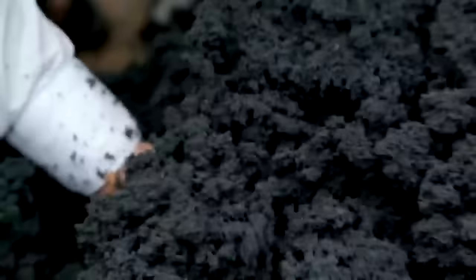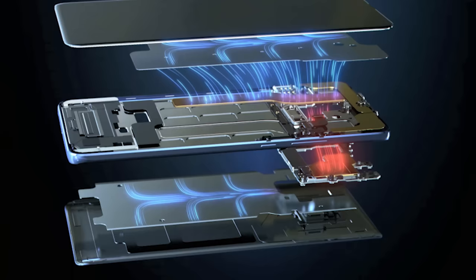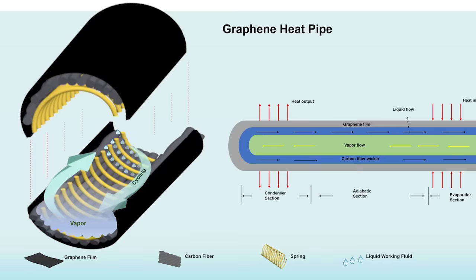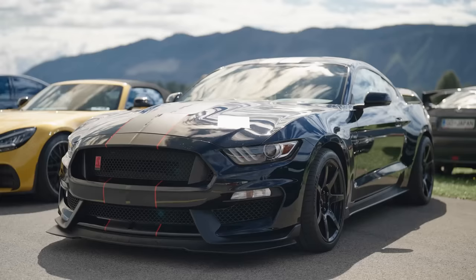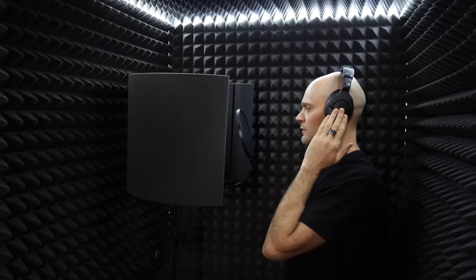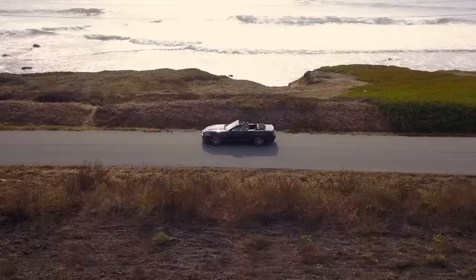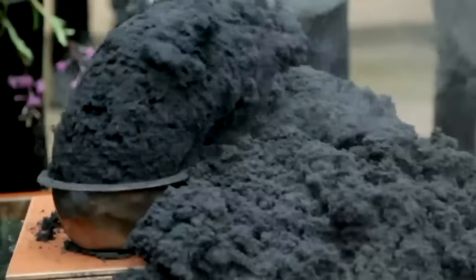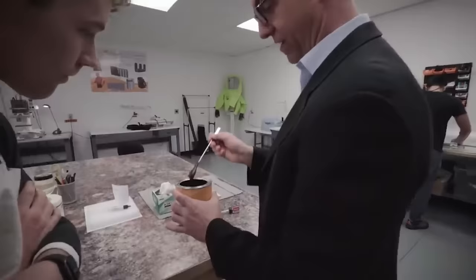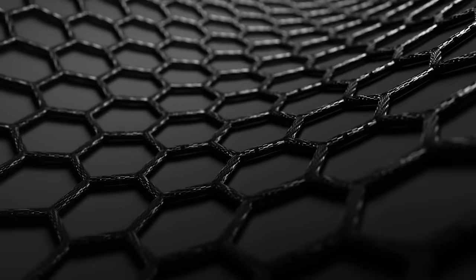The versatility of graphene positions it as a material with the potential to revolutionize numerous industries. For instance, Huawei employs graphene film cooling technology in its flagship smartphones to manage heat effectively. Similarly, Ford incorporates graphene into its 2019 Mustang vehicles, utilizing graphene-reinforced foam to cover noisy components, achieving a quieter ride while enhancing strength and heat resistance. Graphene's contributions extend beyond consumer electronics and automotive applications, offering promise across various sectors. As research and development efforts continue, graphene's potential to transform industries underscores its significance as a material poised to shape the future.